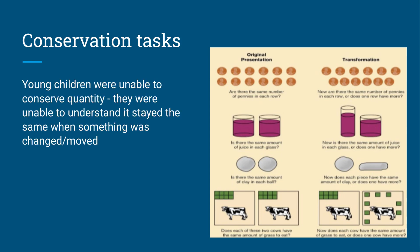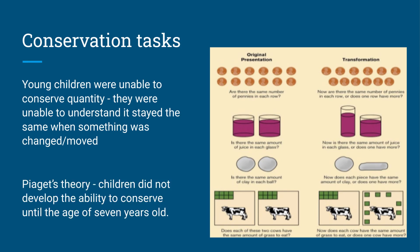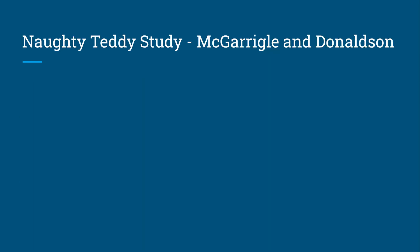Young children were unable to conserve quantity — they're unable to understand that amounts stayed the same when something was changed or moved. In Piaget's theory, children didn't develop this ability until seven years of age.